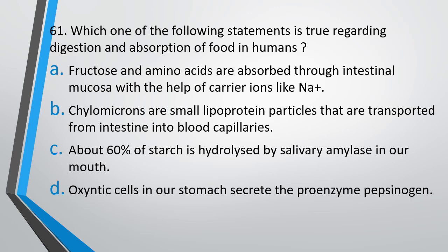Question number 61. Which one of the following statements is true regarding digestion and absorption of food in humans? Option A: fructose and amino acids are absorbed through intestinal mucosa with the help of carrier ions like sodium. Option B: chylomicrons are small lipoprotein particles transported from the intestine into blood capillaries. Option C: about 60% of starch is hydrolyzed by salivary amylase in the mouth. Option D: oxyntic cells of the stomach secrete the proenzyme pepsinogen. The correct answer is option A: fructose and amino acids are absorbed through intestinal mucosa with the help of carrier ions like sodium.